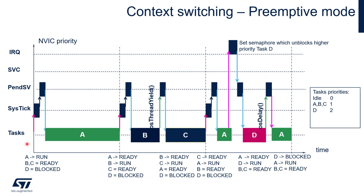Let's start with preemptive context switching. On the screen, we can see the configuration where we have 5 tasks: an idle task with the lowest possible priority 0, tasks A, B, and C with the same priority 1, and task D with priority 2. At the beginning, task D is in a blocked state waiting for a semaphore. Task A has been selected by the scheduler for execution, selected from a ready list, and tasks B and C are within the ready list.